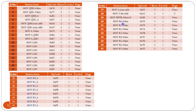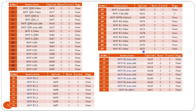MOV R1, #immediate data — immediate data moves into R1 register. Similarly through MOV R7, #immediate data — the general purpose register content is loaded with immediate data; operation code 7FH.